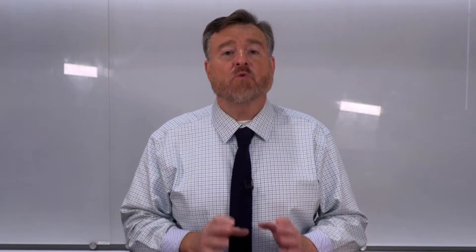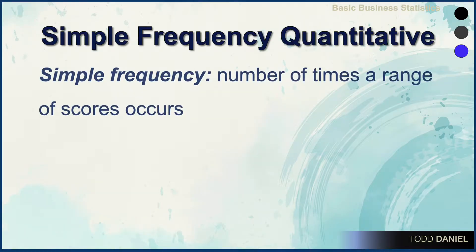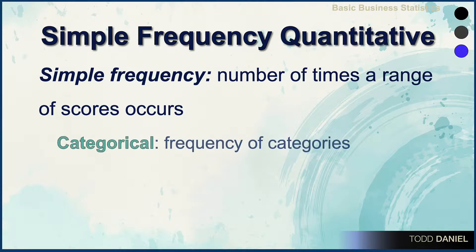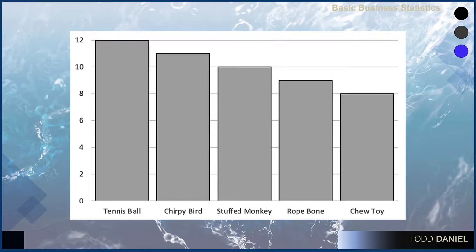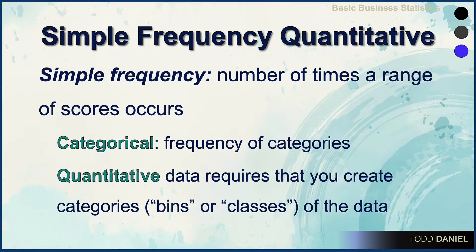For instance, let's re-examine simple frequency. Simple frequency for quantitative data describes the number of times that a range of scores occurs. When we're using categorical data, it is very simple — how many categories do we have? But with quantitative data, we have to create categories called bins or classes in order to use it as categorical data.